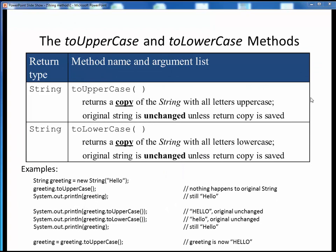To change the case of an existing string, we can use the toUpperCase and toLowerCase methods, as shown here. Both of these methods return a copy of the original string with a case changed as indicated, but note that in each case, the original string is left unchanged unless that return value is written over the original string. In other words, you won't change the case of your string by applying either of these methods alone.